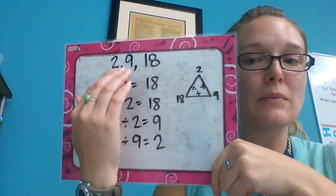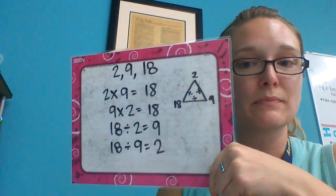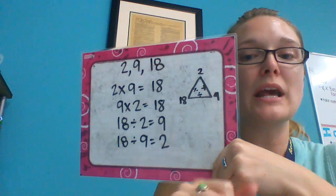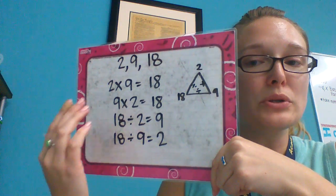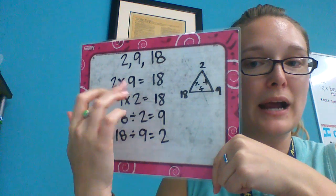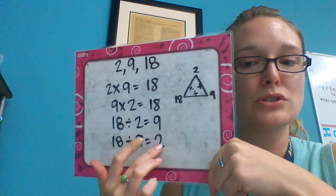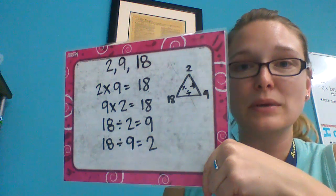So if I have these numbers and they tell me make the fact families, they are looking for 4 fact families. 2 with the one operation, and then 2 with the inverse operation. But you all use those same numbers: 2, 9, 18. We just do them in all the different ways that we can.